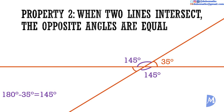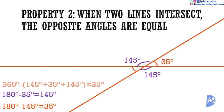And to find the last angle, we can use the exact same logic. We can also recall that there are 360 degrees in a complete turn or rotation. Either way, we will get that the final angle is equal to 35 degrees, thus proving that opposite angles are equal.